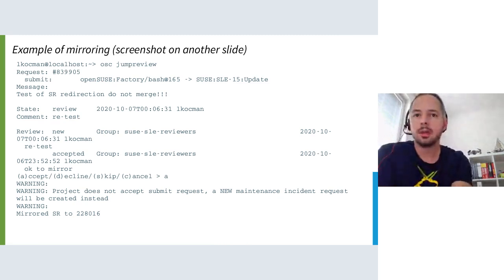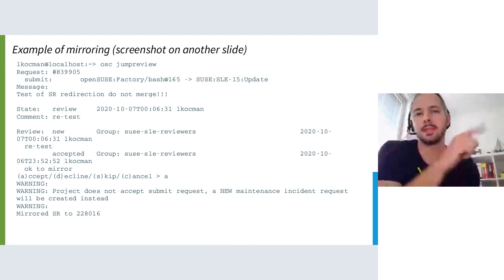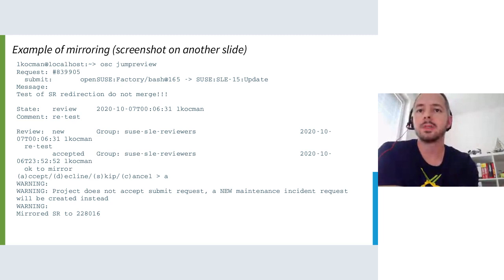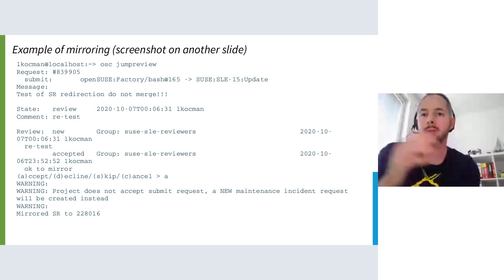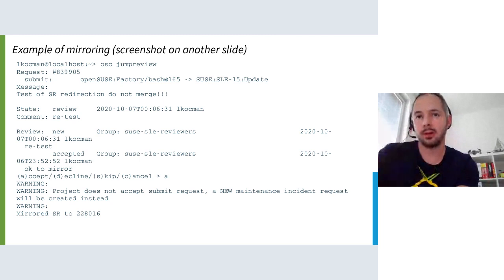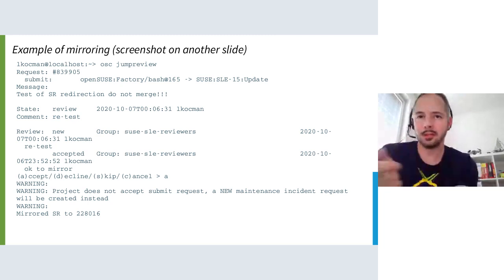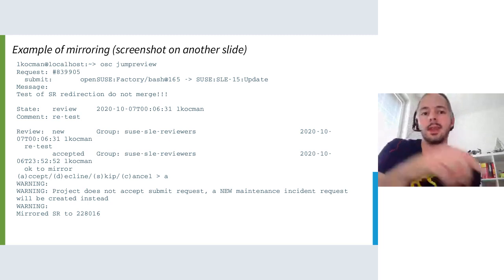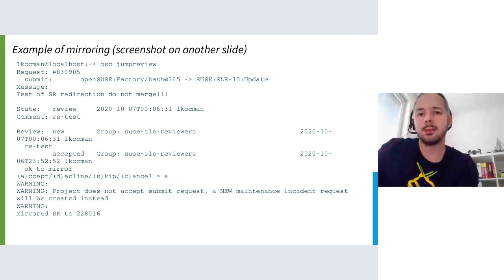Here is an example of the workflow. When people submit requests I use an OSC plugin written by Marco — 'osc jump-review' — and I see all the pending submissions awaiting SUSE review. By accepting them I trigger the mirror internally into OBS and then I see a new submit request ID which is already for build.suse.de.